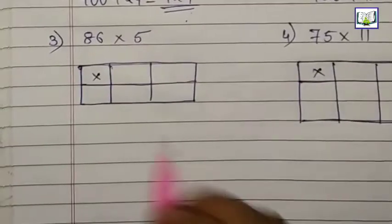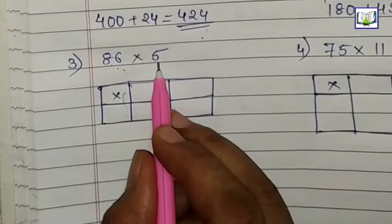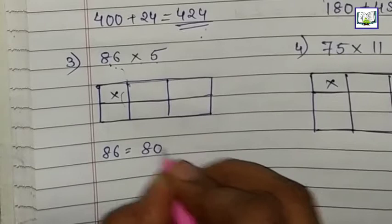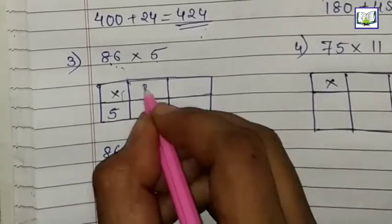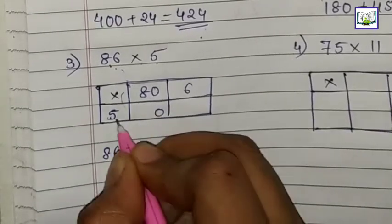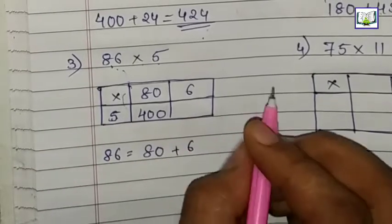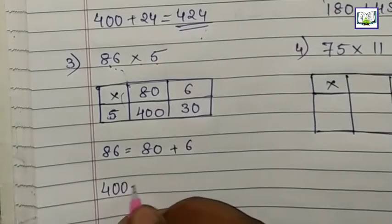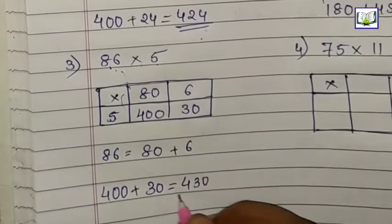Question number 3: 86 multiply by 5. First we break 86. 86 means 80 plus 6. And 5 will come here. Multiply: 5 times 0 is 0, 5 times 8 is 40, which is 400. 5 times 6 is 30. Now we will do addition: 400 plus 30 equals 430.